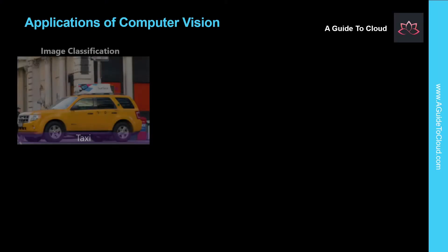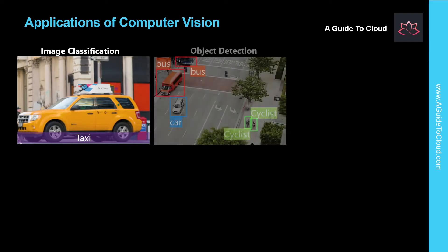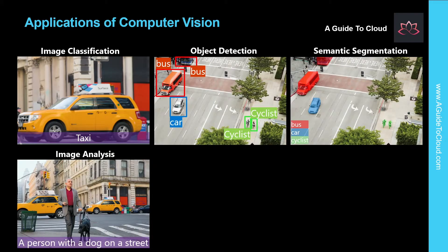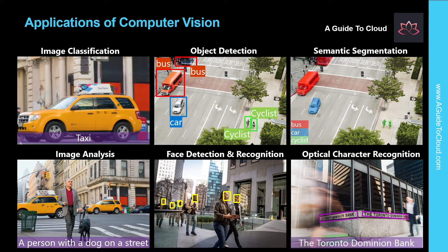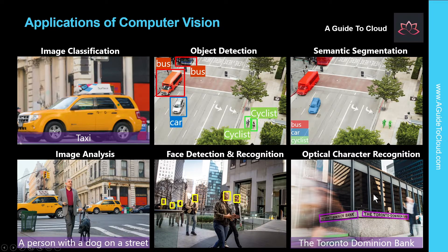Most computer vision solutions are based on machine learning models that can be applied to visual input from cameras, videos, and images. Some of the common applications of computer vision include image classification, object detection, semantic segmentation, image analysis, face detection and recognition, optical character recognition, and more. I'm going to take you through them one by one.